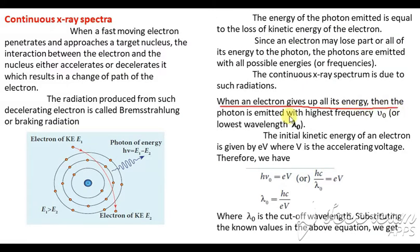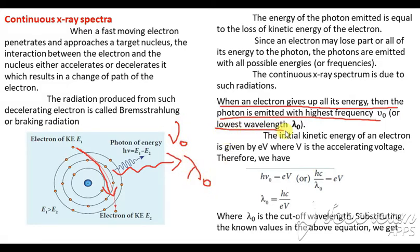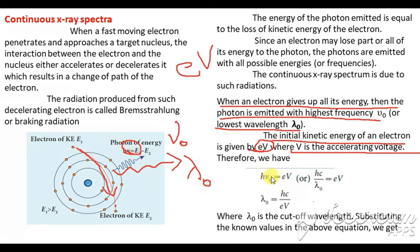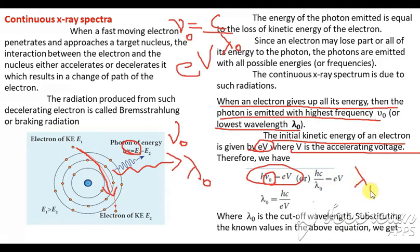When an electron gives all of its energy, the photon is emitted with the highest frequency ν₀. The initial kinetic energy is given by eV, where V is the voltage. So we have hν = eV. Since ν₀ = c/λ₀, substituting gives λ₀ = hc/eV, where λ₀ is the cutoff wavelength.